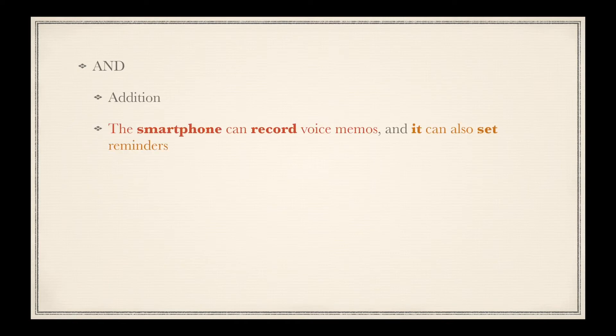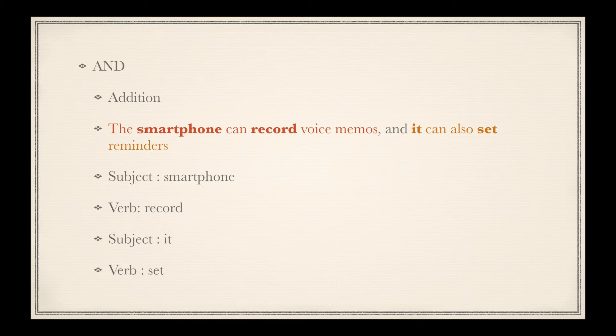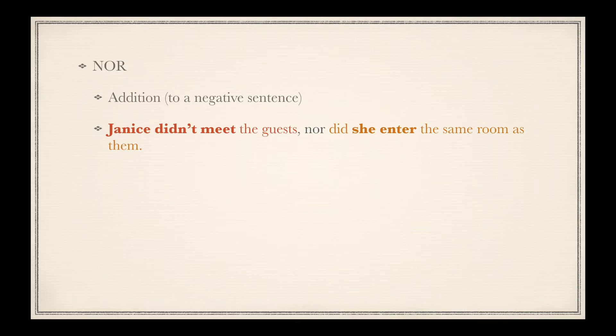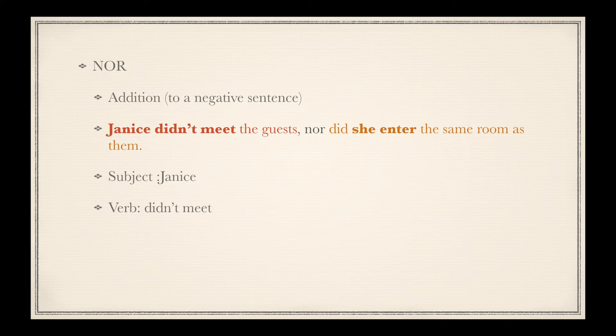And suggests addition of information: 'The smartphone can record voice memos, and it can also set reminders.' Smartphone is the subject with record as the verb in the first clause; it is the subject and set the verb in the second. Coming to nor — its purpose is addition to a negative sentence: 'Janice didn't meet the guests, nor did she enter the same room as them.' Notice how the helping verb did immediately follows nor in its positive form, as nor already fills in for the negative.